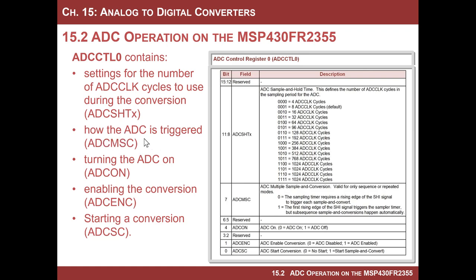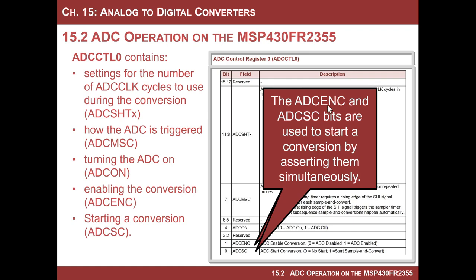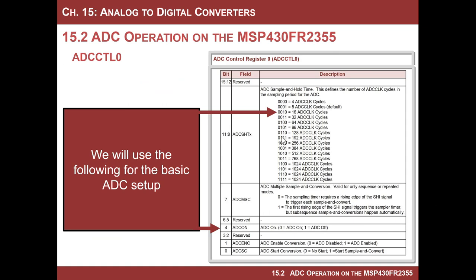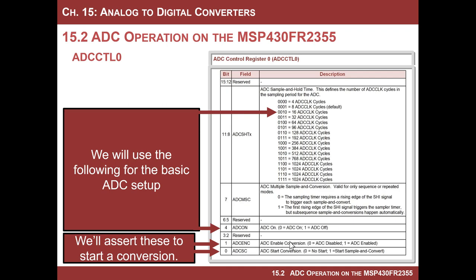There's also a setting in this register for how the ADC is triggered — when is it going to start. Then there's a bit for turning it on, enabling the conversion, and starting the conversion. The way I usually do it is to simultaneously assert the enable and the start at the same time, which is recommended. So for the bare minimum to get this going: configure the number of clock cycles to 16, turn it on, and then trigger the conversion by asserting the enable and start bits.